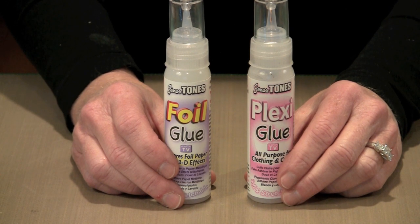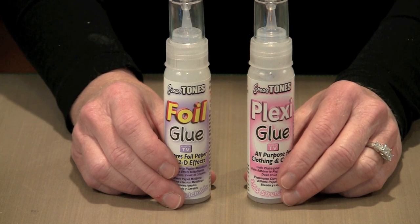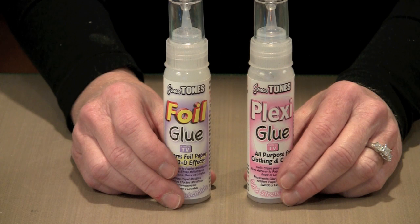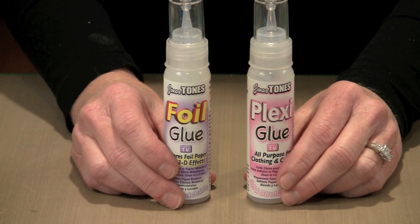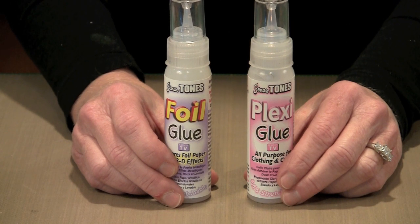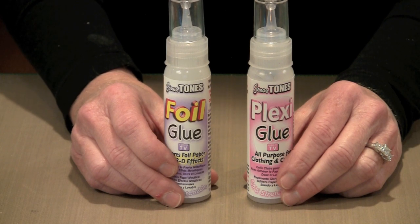The way these foil glues work is that you put them on a piece of paper and they're very wet. As they dry, they dry off to being tacky, and that's how the foil adheres to them. Both are washer and dryer safe. The only thing to bear in mind is that the more dimension you give, if you squirt out a big blob of glue, it's going to take longer to dry before it reaches that tacky state.